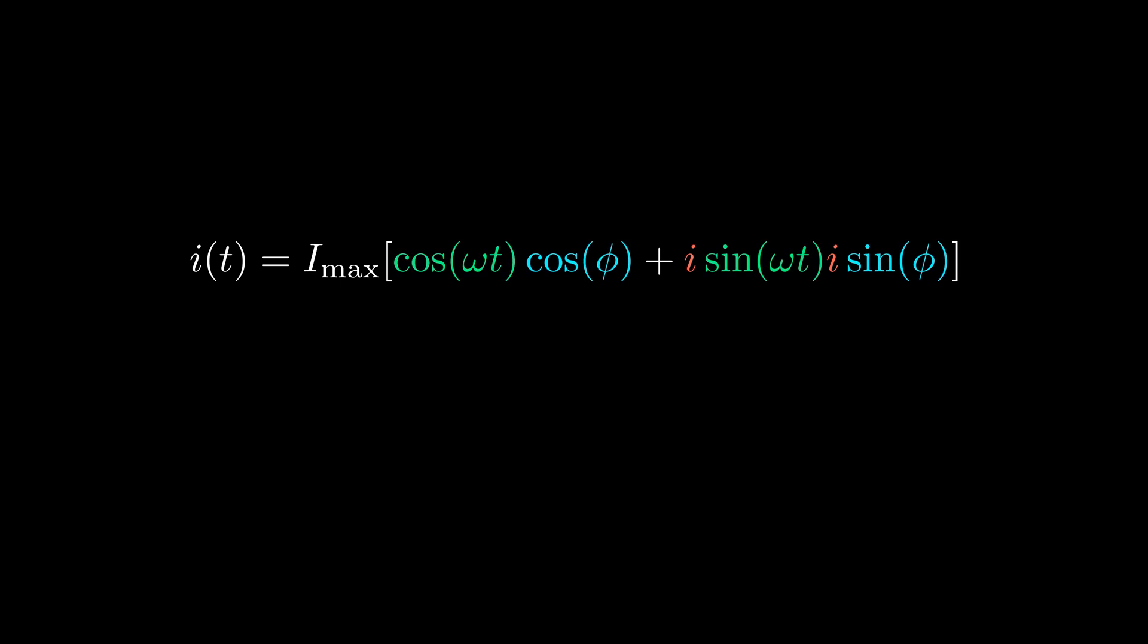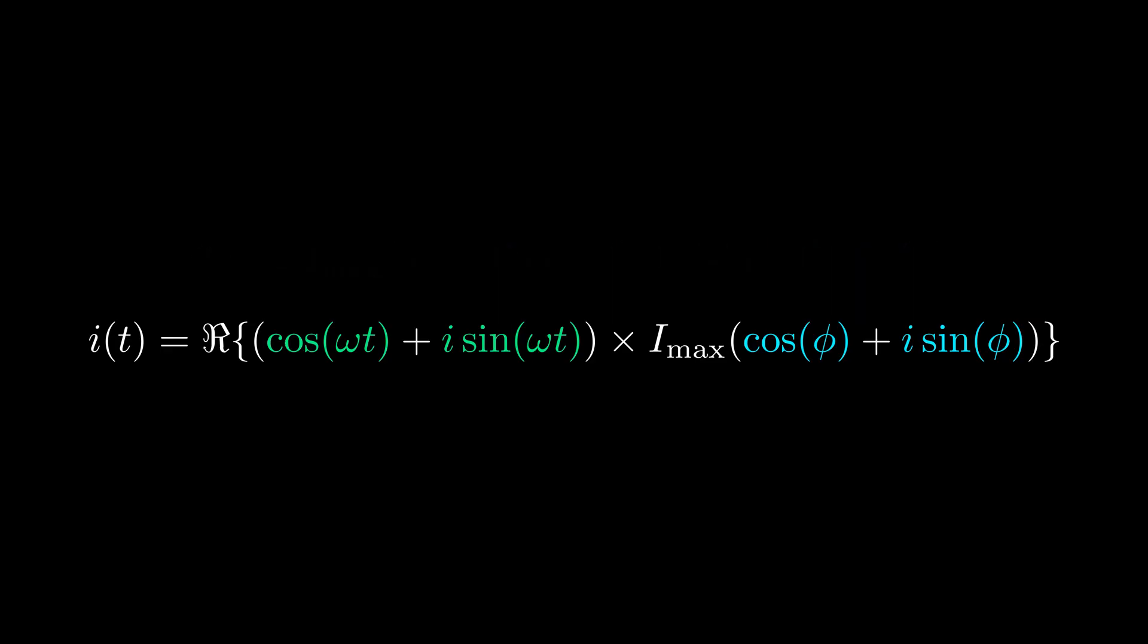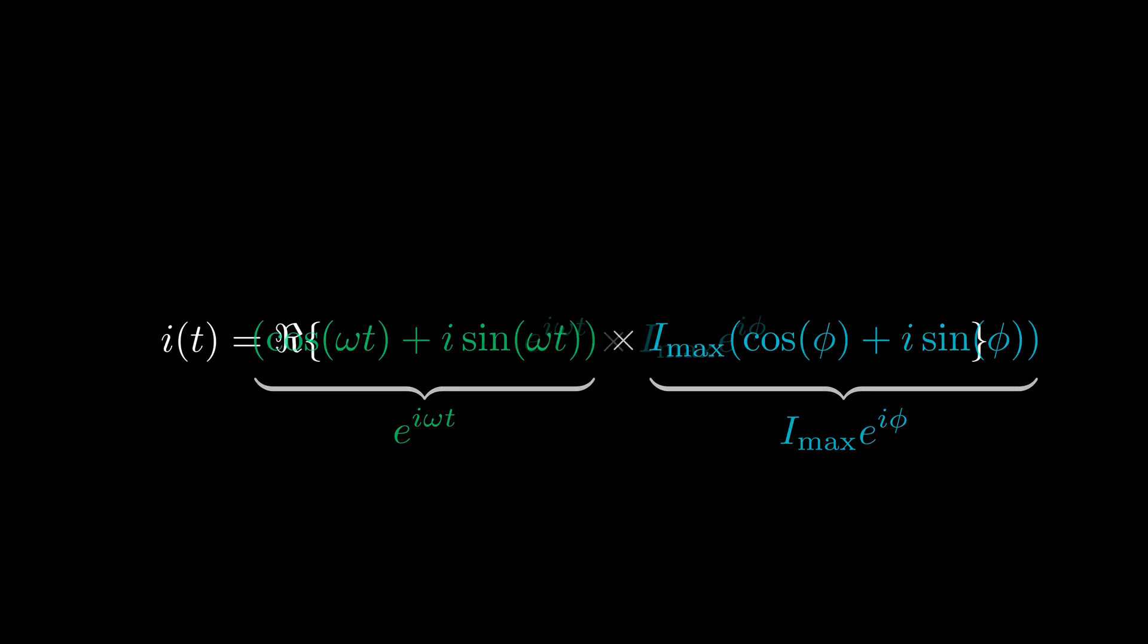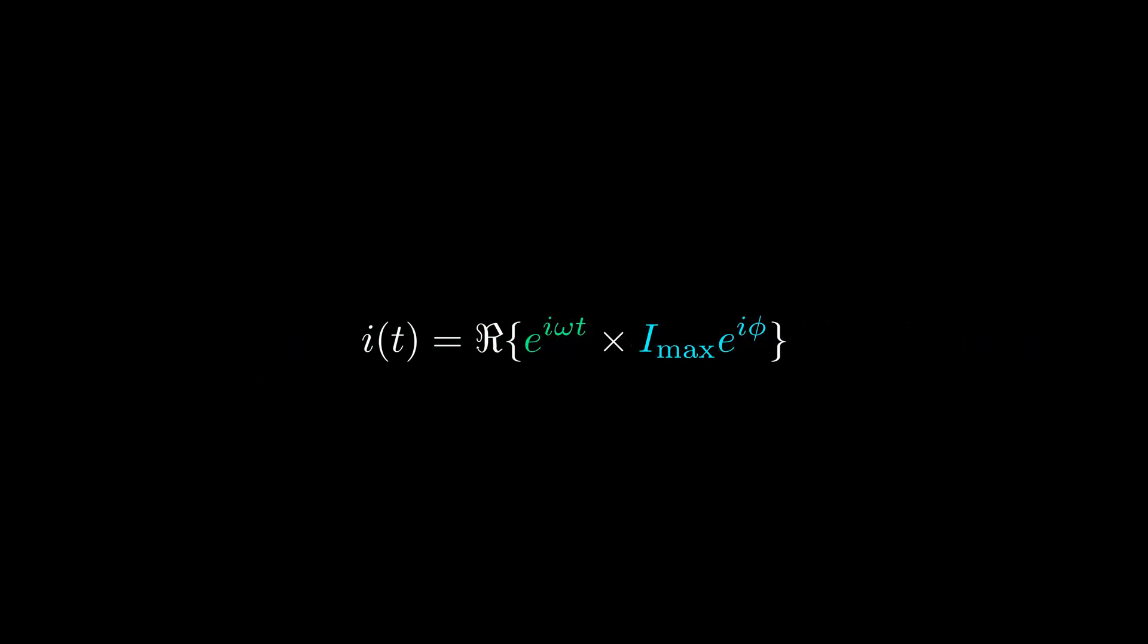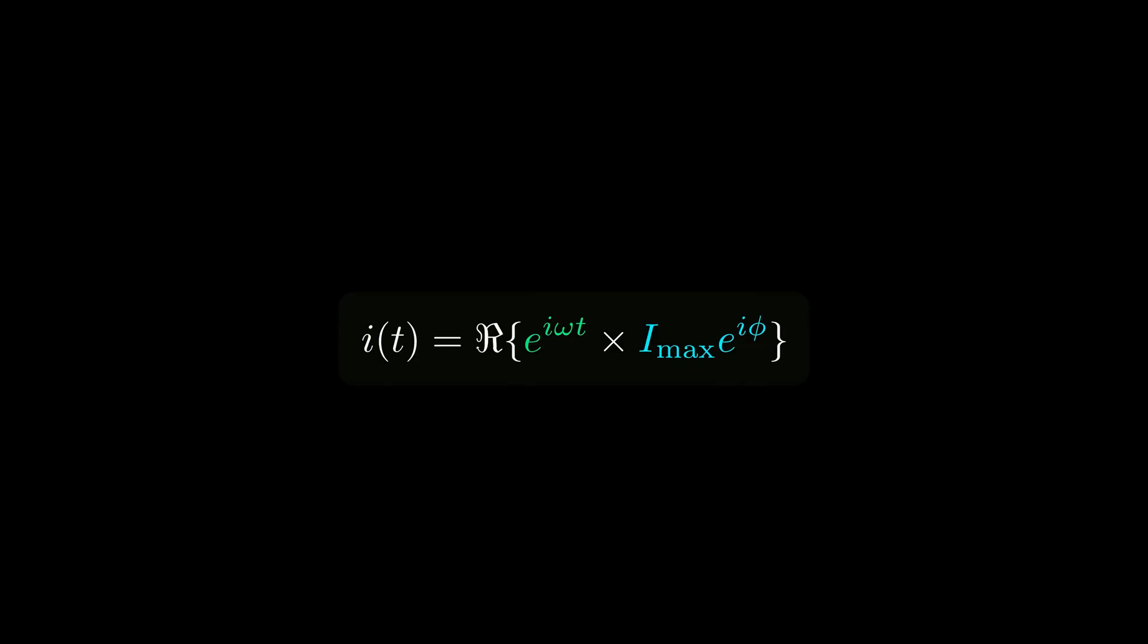Writing this complex number's multiplication and retaining the real part yields the same result. Now if we apply Euler's formula, our current becomes the real part of the multiplication of two complex numbers. This looks somehow worse than working with the sine waves, but bear with me. Things will become much simpler by the end of the video.